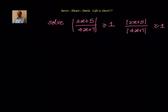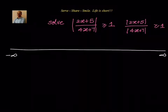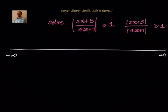We will see where 2x + 5 is positive or negative, and similarly where 4x + 7 is positive or negative. For that, we take the number line and divide it into three parts. The critical point for the numerator is x = -5/2, and for the denominator it is x = -7/4, given by 2x + 5 = 0 and 4x + 7 = 0 respectively.